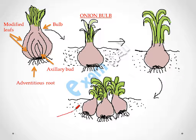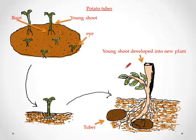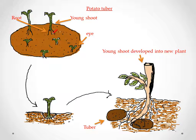Third is tuber, in which we take the example of potato. You have seen small green buds on a potato — these are called the 'eye'. This eye will develop into a young shoot with a root. If we take only this part and put it into the soil, roots will develop, as shown in the diagram, along with a stem, and after that a potato will be developed.